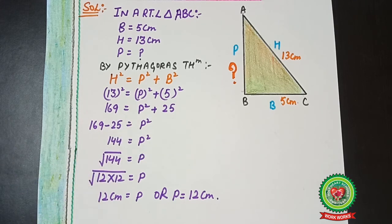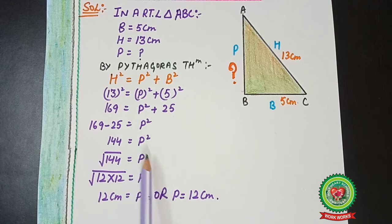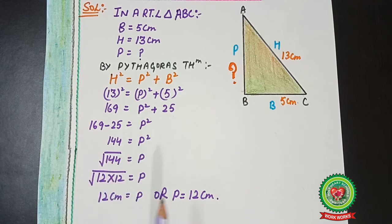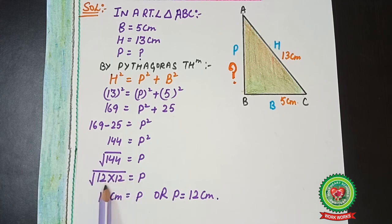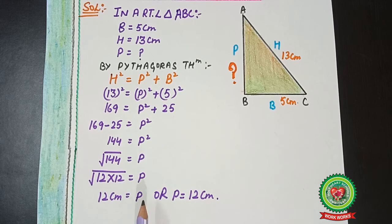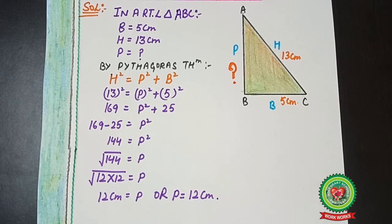We don't need P squared — we need P. So we shift the square to the other side and it changes into a square root. The perfect square of 144 is 12. So P = 12 centimeters.